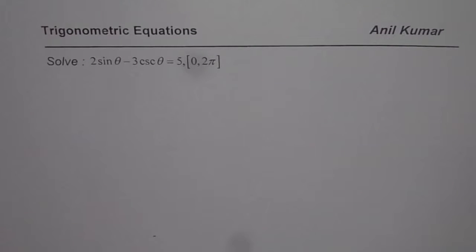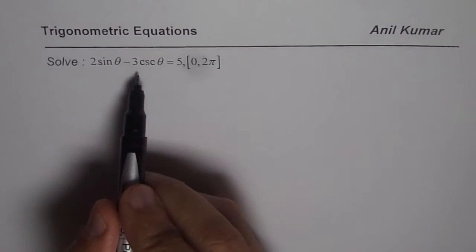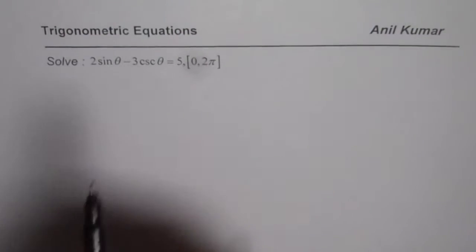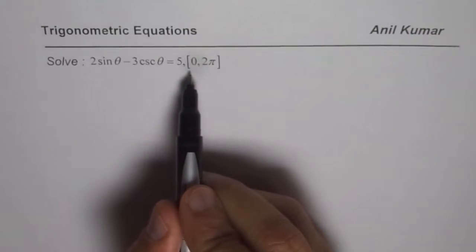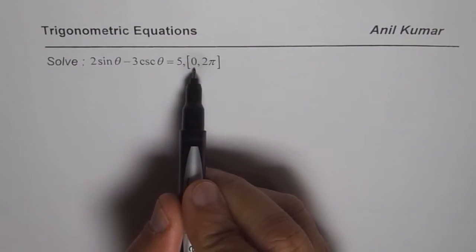I am Anil Kumar and now let us see how to solve trigonometric equations in which primary and secondary trigonometric ratios are involved. So we have 2 sin theta minus 3 cosecant theta equals to 5 and we need to find the solution in the domain from 0 to 2 pi.